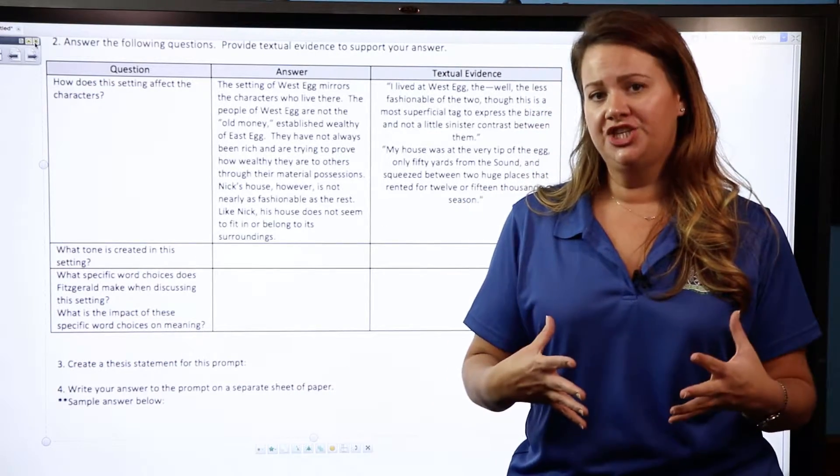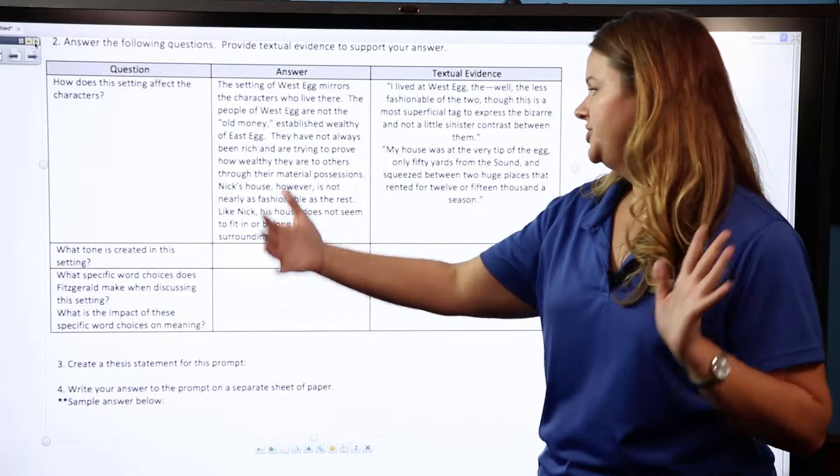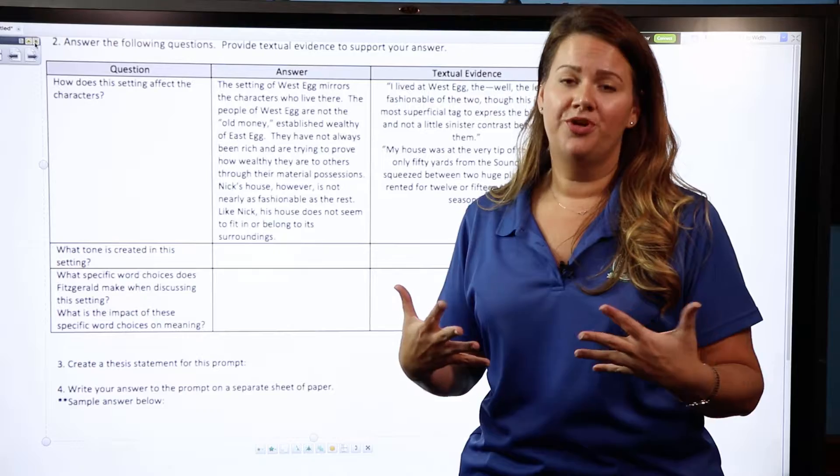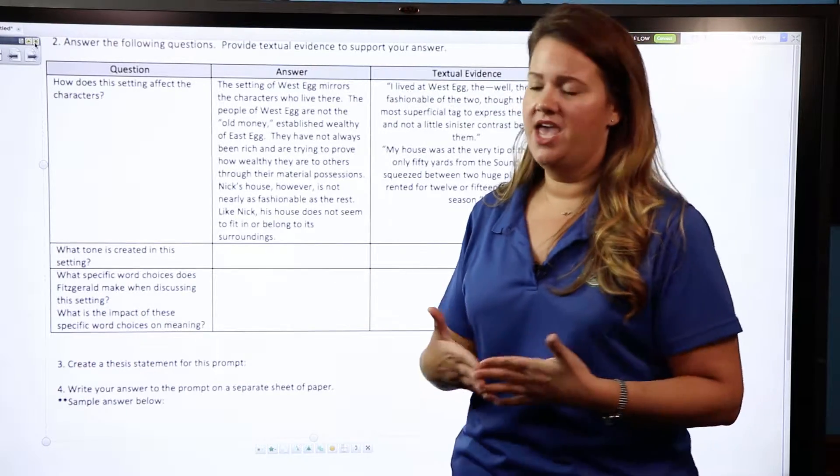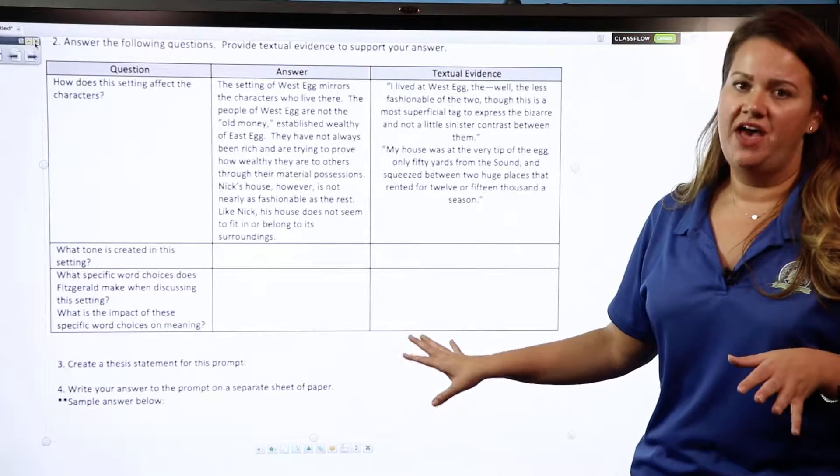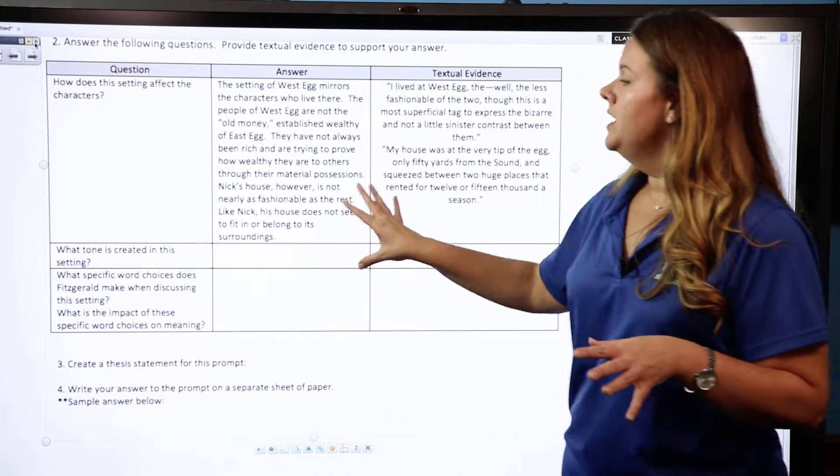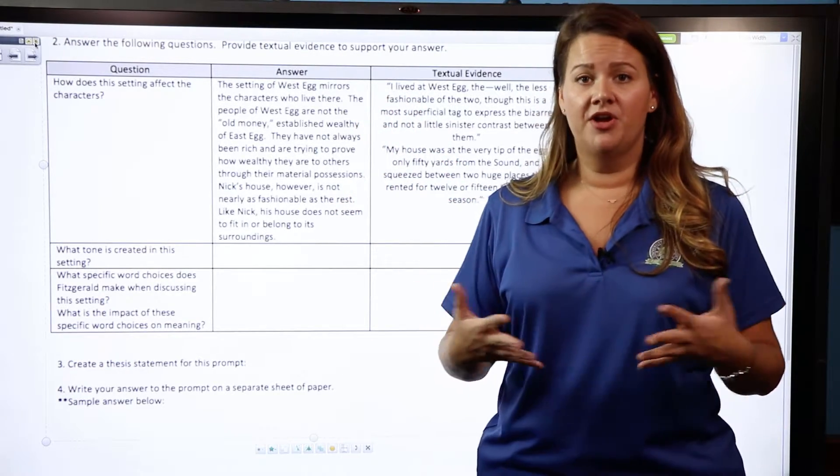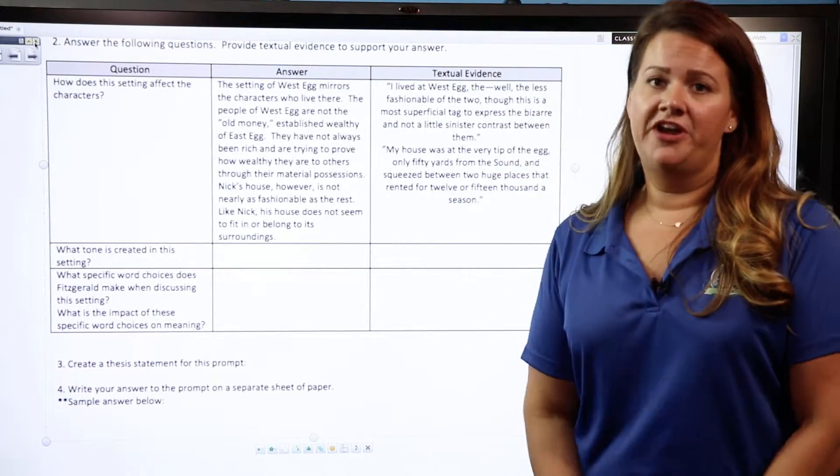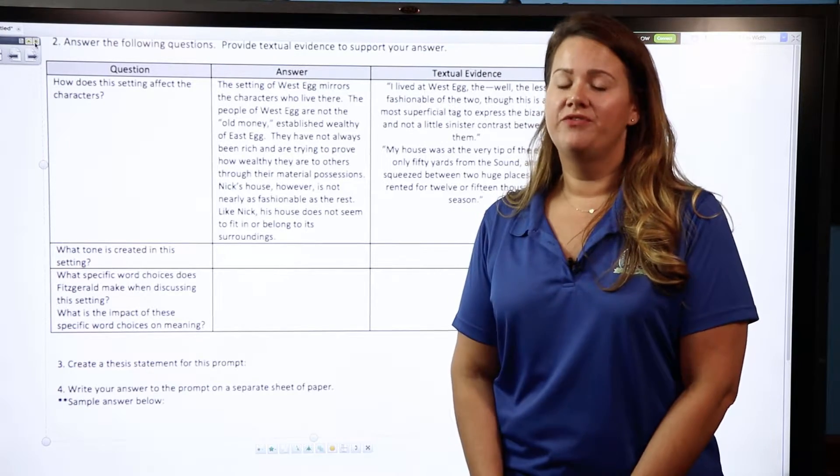So that's when you're really, again, going to take it back to the author's craft. You're going to look at that diction and how that diction helps to create a meaning for how this setting is viewed and interpreted and how you're going to analyze it. So you'll write a response here, you'll pull in textual evidence here, and these will eventually become things—body paragraphs—that you can write about or that you will develop as you write your literary analysis on a setting of your choice.